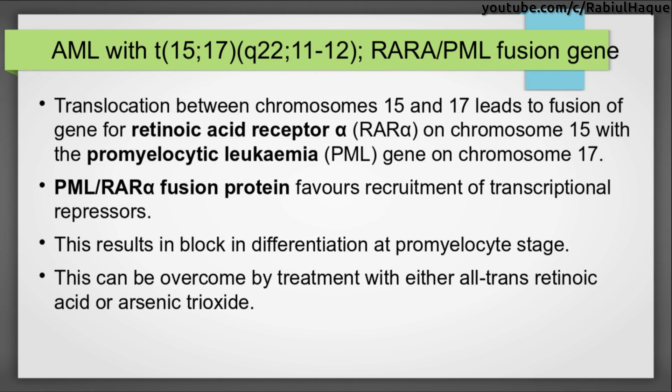Translocation between chromosomes 15 and 17 leads to fusion of the retinoic acid receptor alpha gene on chromosome 15 with the promyelocytic leukemia gene on chromosome 17. The resulting fusion protein favors recruitment of transcriptional repressors, causing a blockage in differentiation at the promyelocytic stage. This can be overcome by treatment with all-trans retinoic acid or arsenic trioxide.